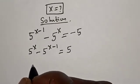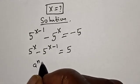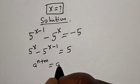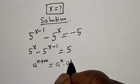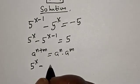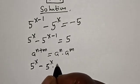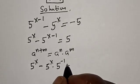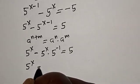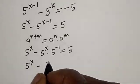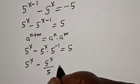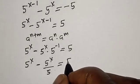Remember this rule: a raised to power n plus m is equal to a raised to power n multiplied by a raised to power m. Then we have 5 raised to power x minus 5 raised to power x multiplied by 5 raised to power minus 1 is equal to 5. This is 5 raised to power x minus 5 raised to power x over 5, and it's equal to 5.